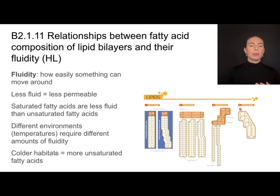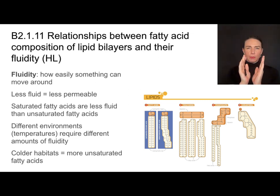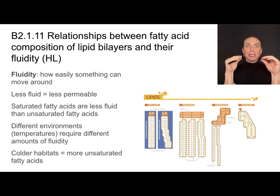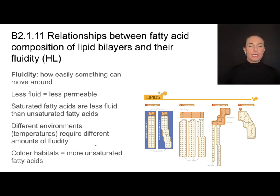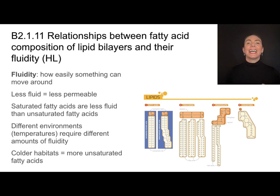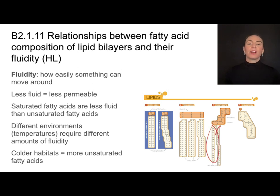In colder habitats, I want to make sure that the cell membrane doesn't become stiff and hard to move around. So in colder habitats, cell membranes are going to be comprised of more unsaturated fatty acids to control that fluidity. Whether something has more saturated or unsaturated fatty acids can be dictated by its environment and how fluid it needs to be.